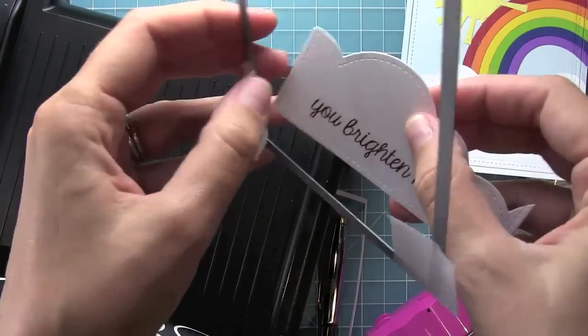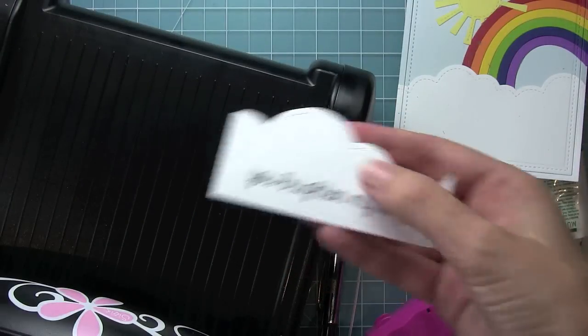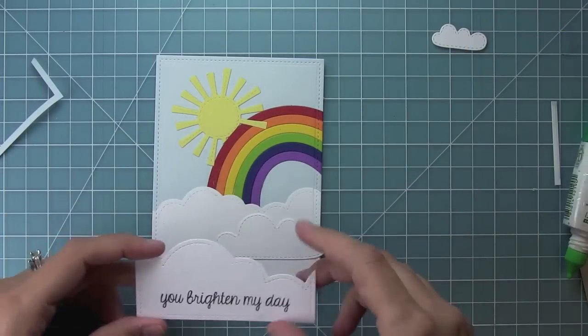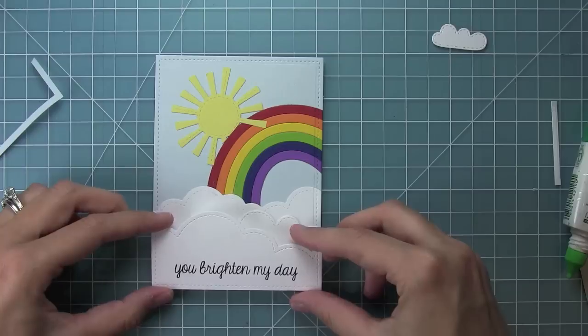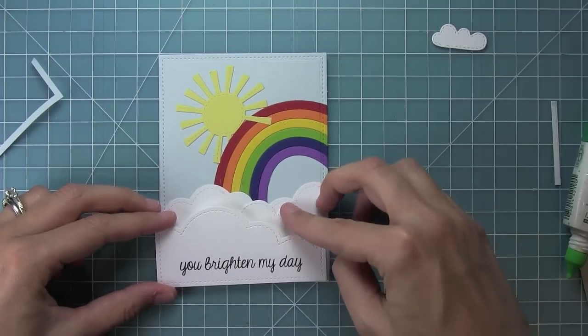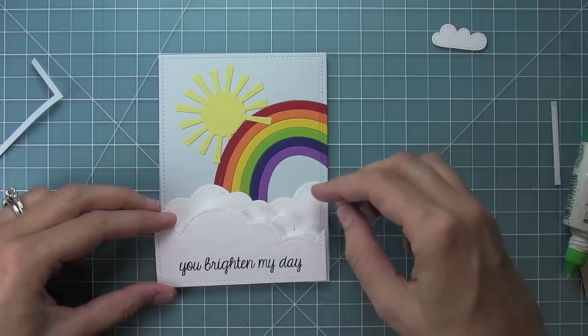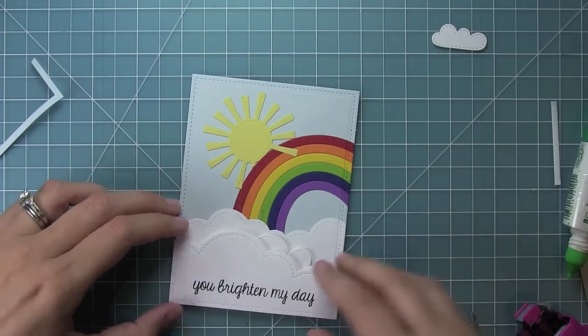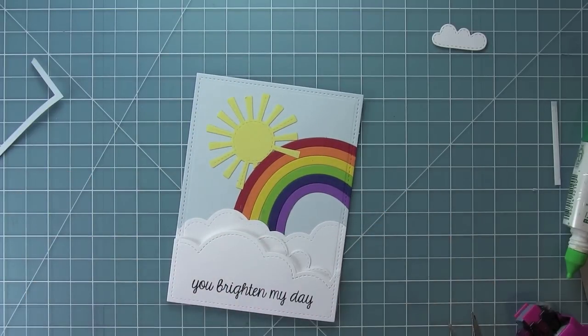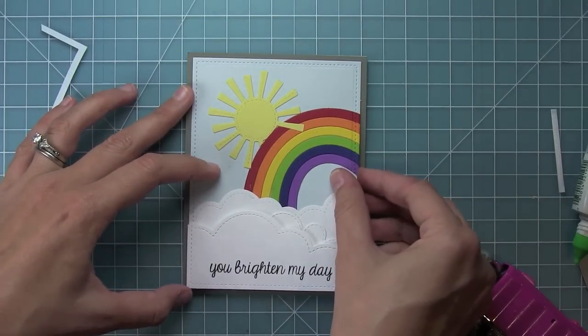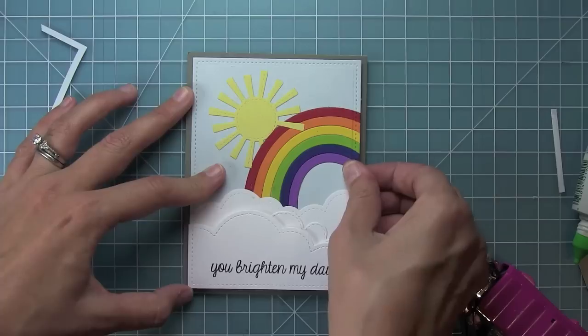The reason I did that one separately is I want to pop that one up on foam adhesive later. So now that that's ready to go, I'm going to layer one of the spring showers clouds just for some extra poofiness right behind there. And I've got some foam adhesive on the back of the You Brighten My Day one, and so that'll kind of help it all stick together and give it some nice cloud dimension. And now I'm just layering it on a card base with a nice gray border all the way around.